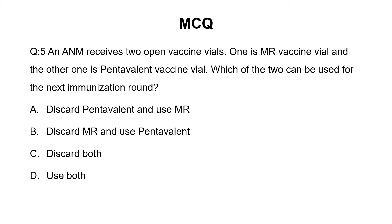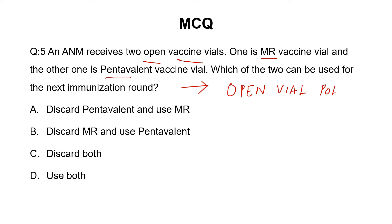Since the question mentions that the ANM receives two open vaccine vials — one MR and one pentavalent — and asks which can be used for the next immunization round, this question is all about open vial policy. To answer this question, you must know about open vial policy. So let's start discussing what open vial policy is.